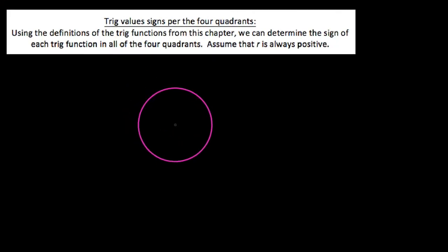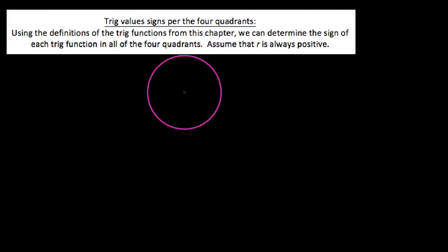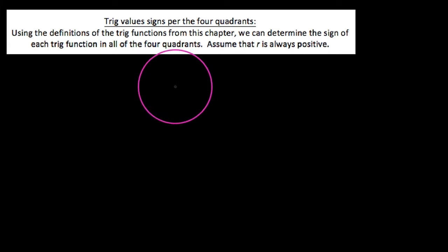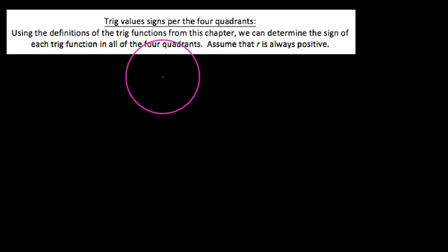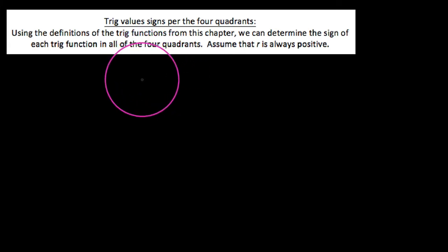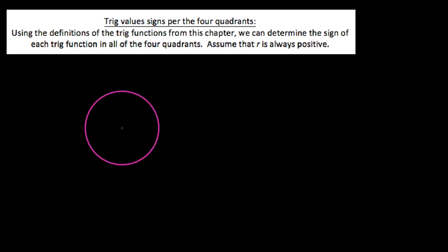In this video, I'm going to briefly explain how we can easily tell whether or not a trig value — the value of a trig function — will be positive or negative depending upon what quadrant its angle terminates in.